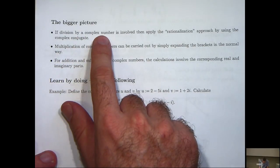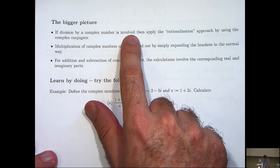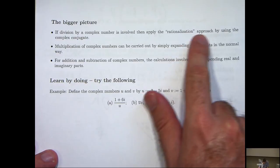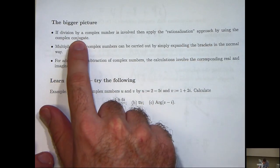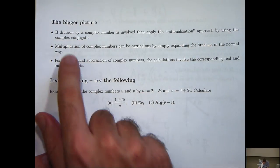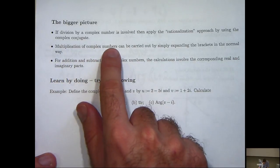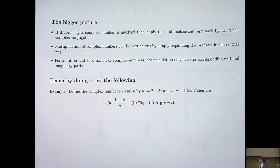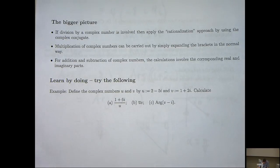Well, if you're dividing by a complex number, then in general, a good idea is to apply the rationalization approach by using the complex conjugate as we did in part A. Multiplication of complex numbers can be carried out by simply expanding the brackets in the normal way and remembering that i squared equals negative 1. Okay. So it's quite easy.